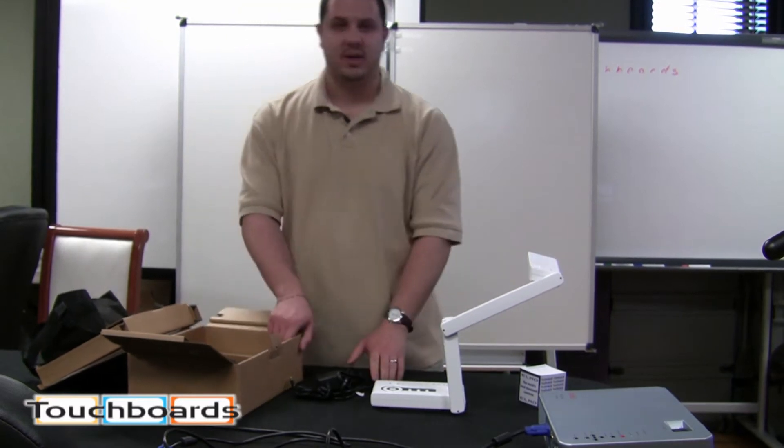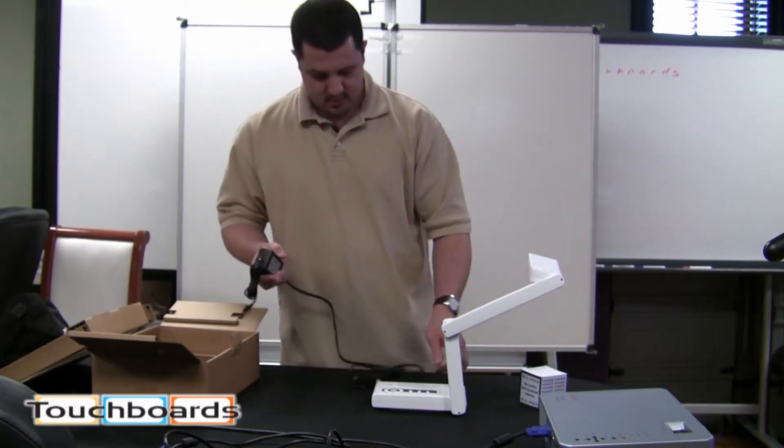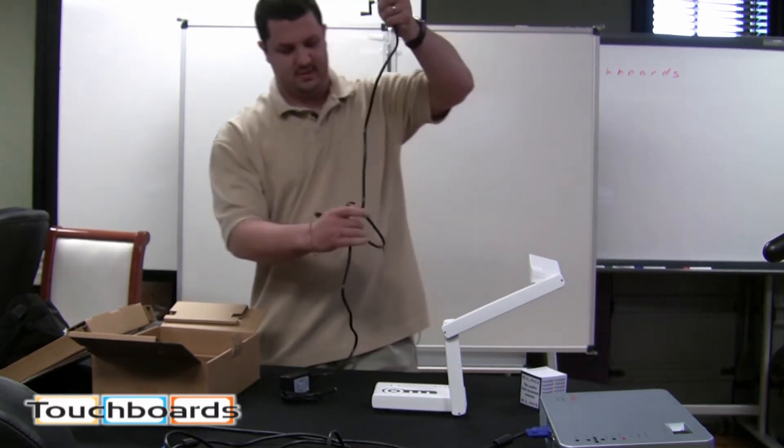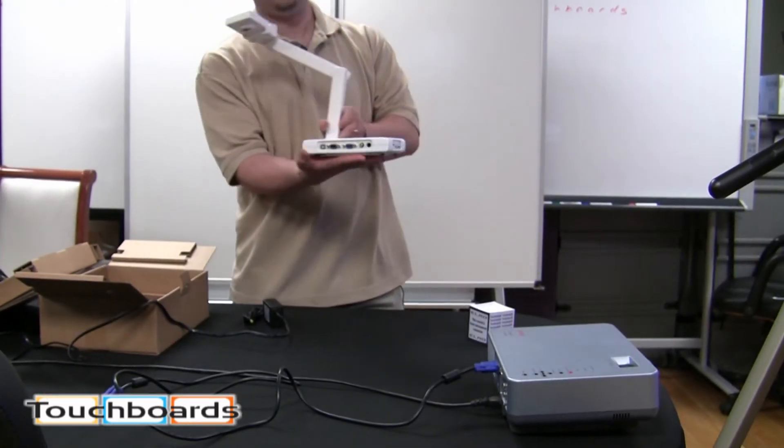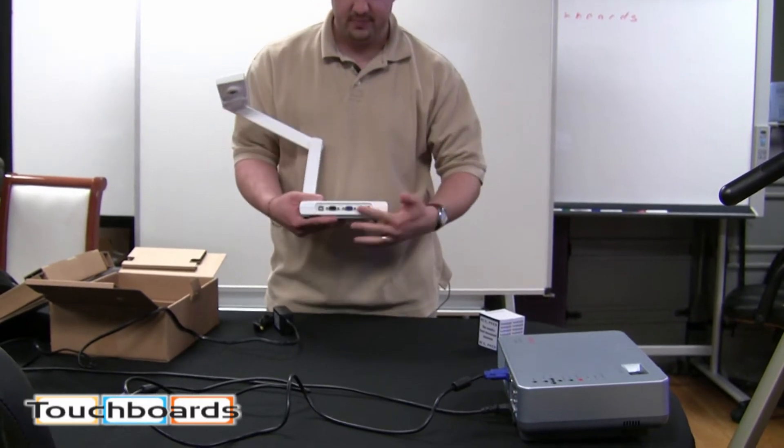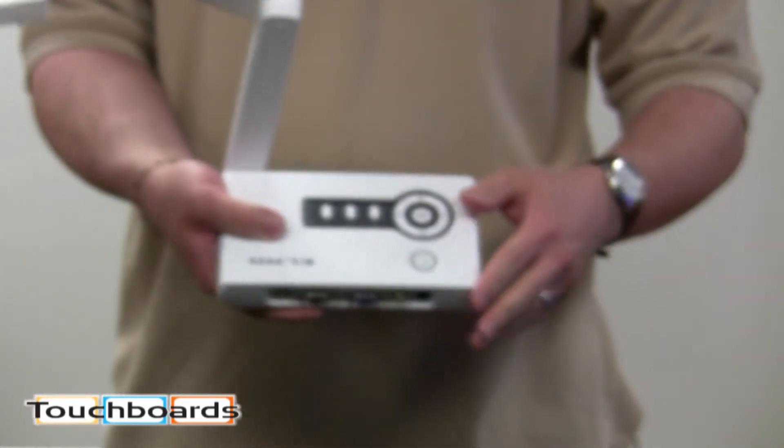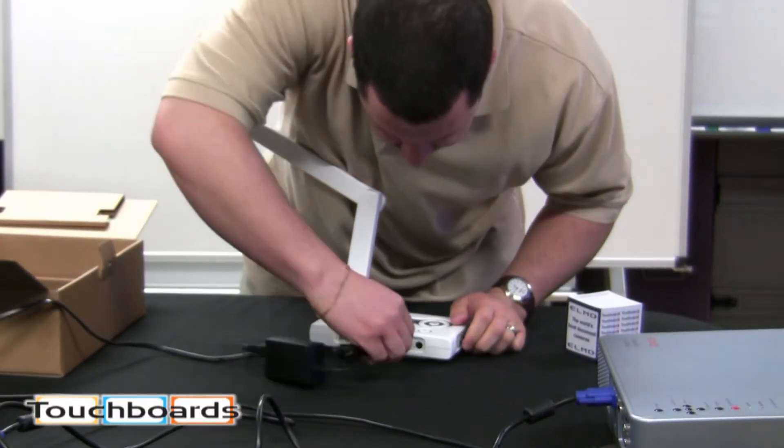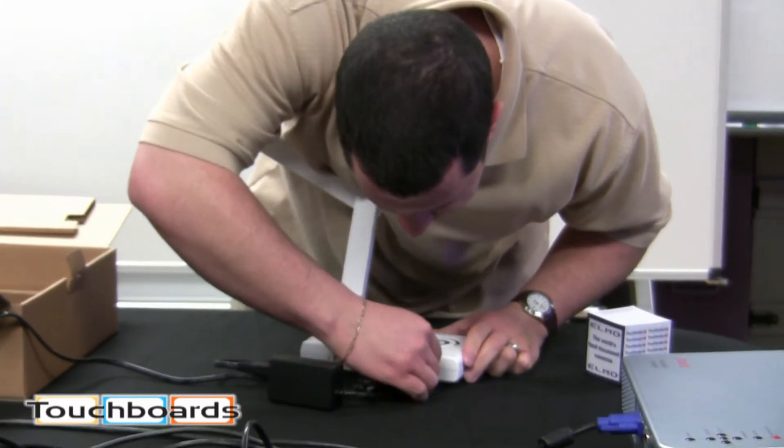I'm just going to show you real quick how this sets up. Get our power supply here, which we're going to plug in first. If you look here, this is our connection panel on the Elmo. This is also all the buttons you need right here. First what we're going to do is plug in the power, this little jack right there.